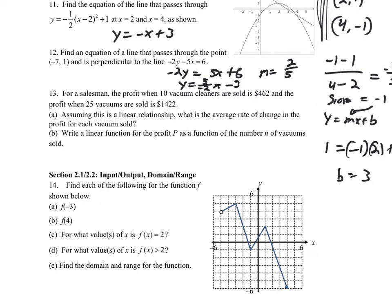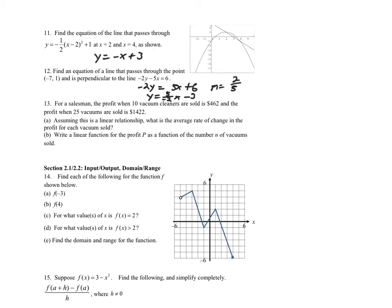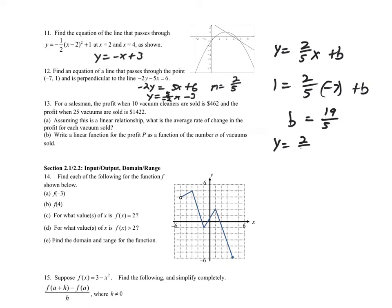Taking the opposite reciprocal of negative 5/2 gives our slope: 2/5. Now using y = (2/5)x + b and plugging in the point (negative 7, 1): 1 = (2/5)(negative 7) + b. Solving gives b = 19/5. The final equation is y = (2/5)x + 19/5.